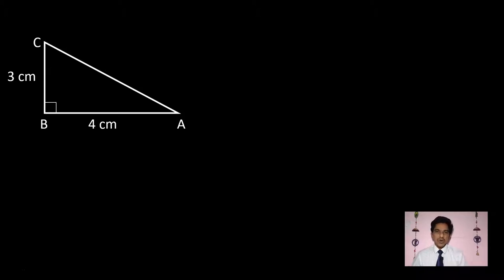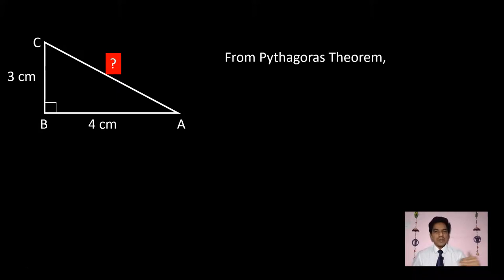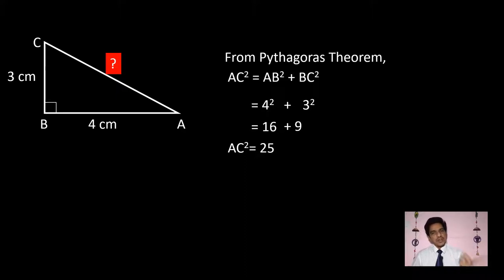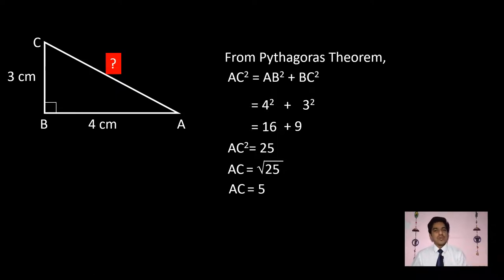Let me take an example to illustrate Pythagoras' theorem. In this right angle triangle, AB is 4 and BC is 3; I want to find the hypotenuse AC. From Pythagoras' theorem: AC² = AB² + BC² = 4² + 3² = 16 + 9 = 25. So AC = √25 = 5. The hypotenuse AC is equal to 5 centimeters.